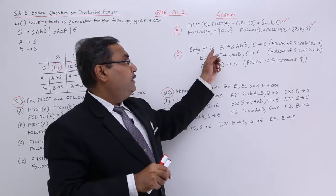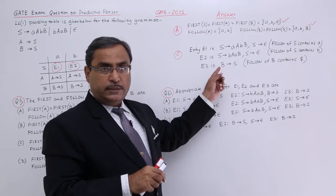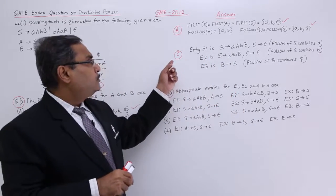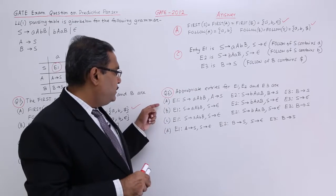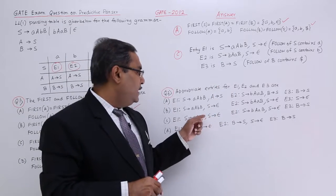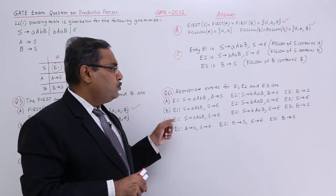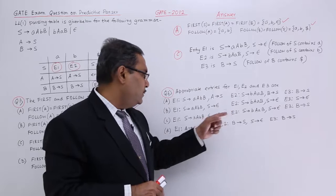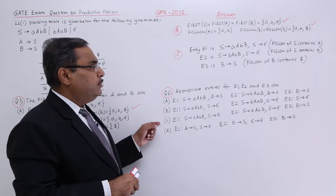We are getting all the three E1, E2, E3 combinations. Please go through the rules and you will be getting this idea. Option number C is matching with that. Option number C is matching with this particular E1, E2, E3 combinations. What are the expected production rules will be there? That is why option number C will be the answer.